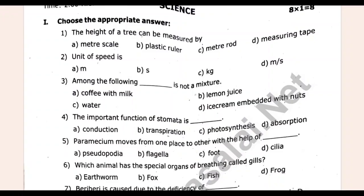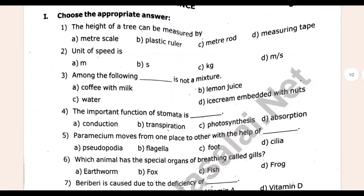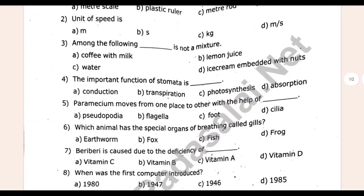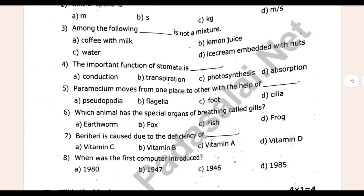The height of a tree can be measured by dash. The unit of speed is dash. Among the following, dash is not a mixture. The important function of tomato is dash. Paramecium moves from one place to another with the help of dash. Which animal has special organs of breathing called gills?